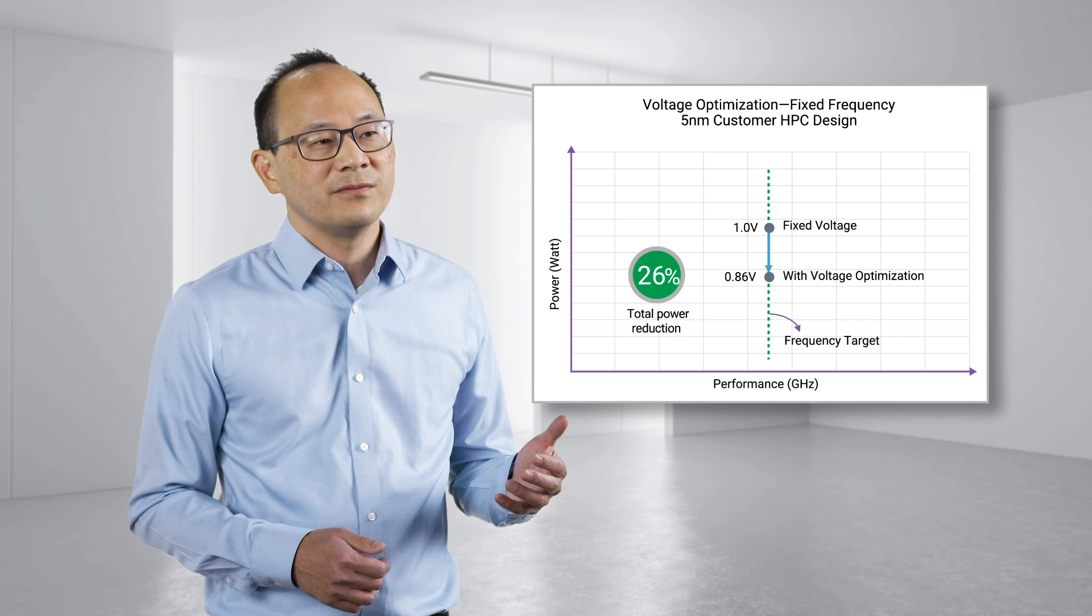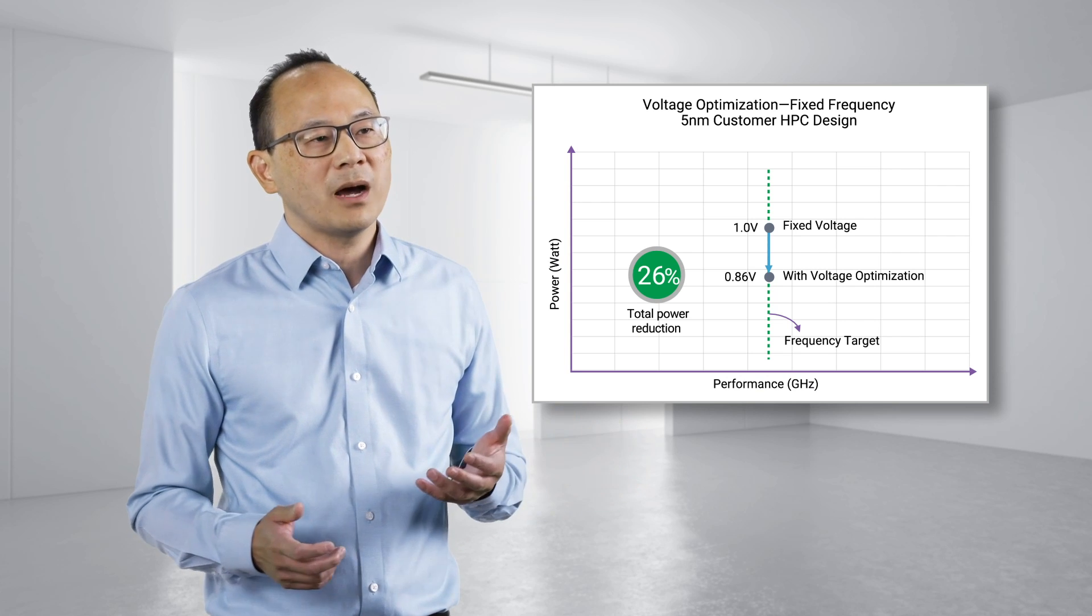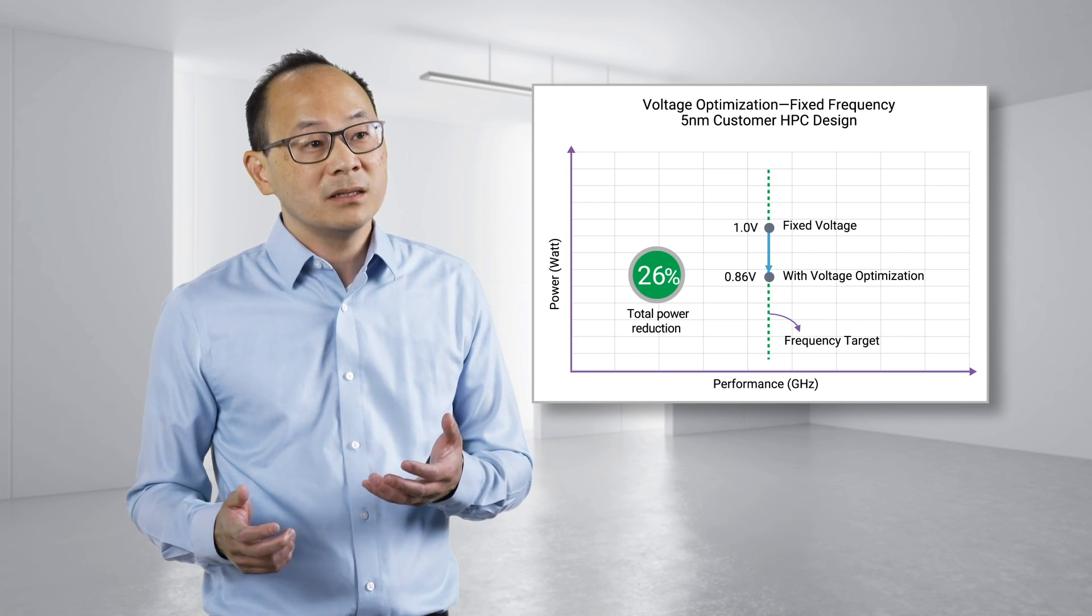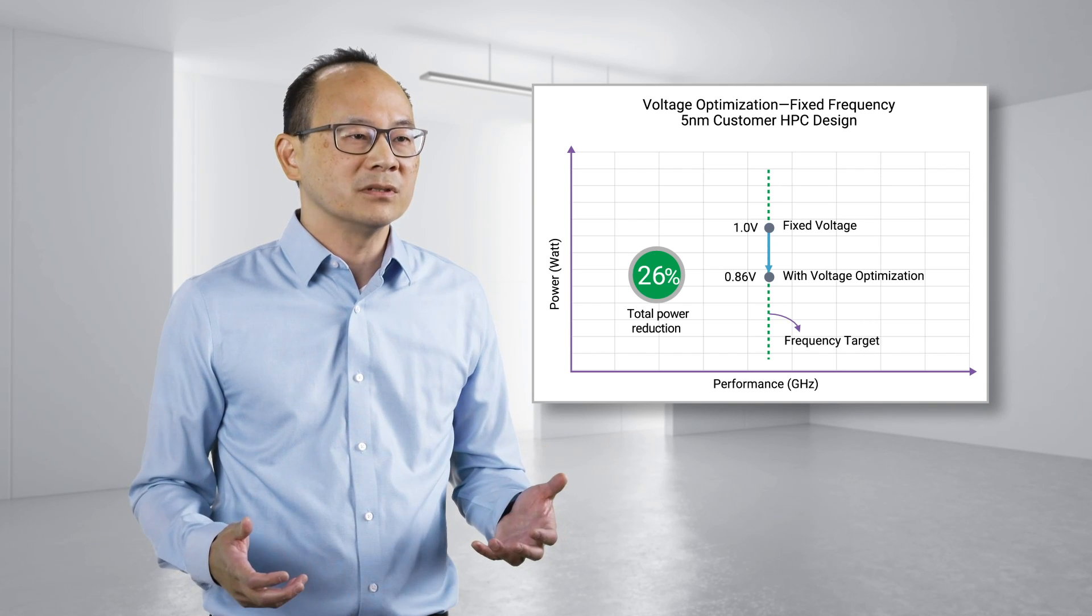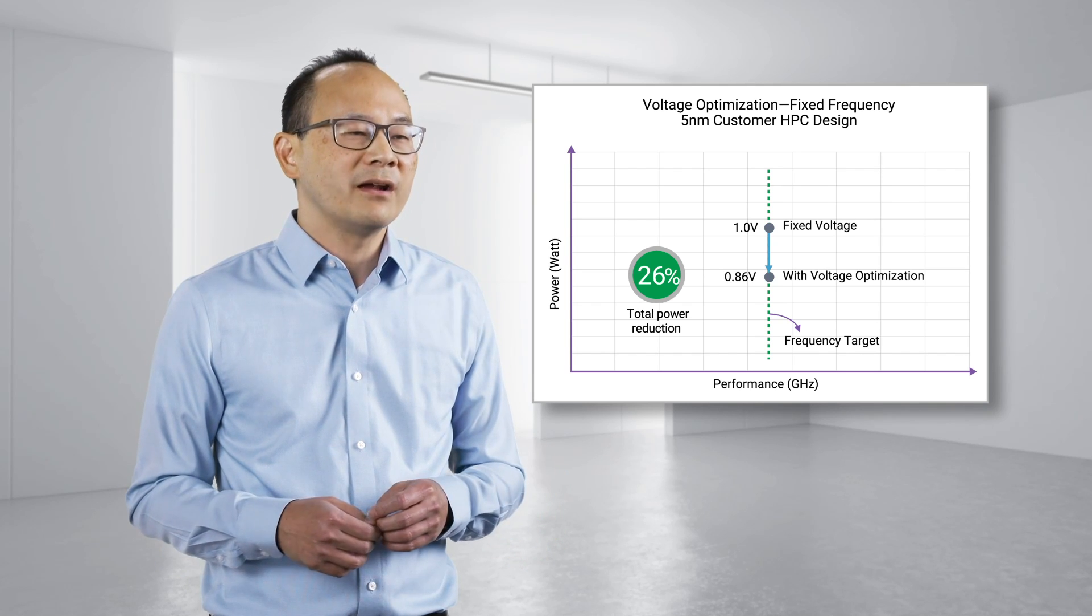In a design flow with a fixed frequency target, total power can be lowered by directly reducing dynamic power with a lower operating voltage while minimizing leakage and area impact.